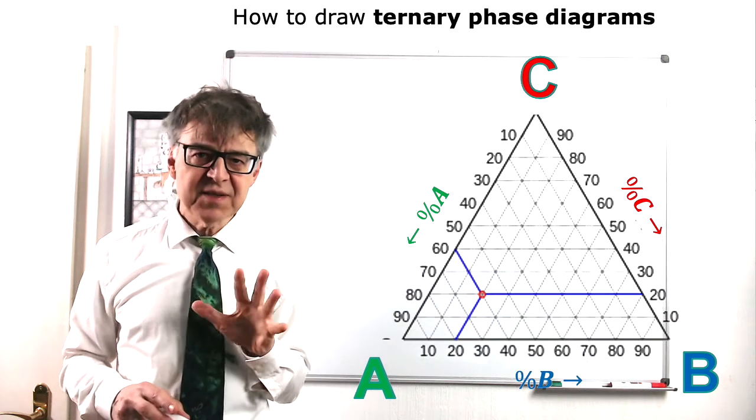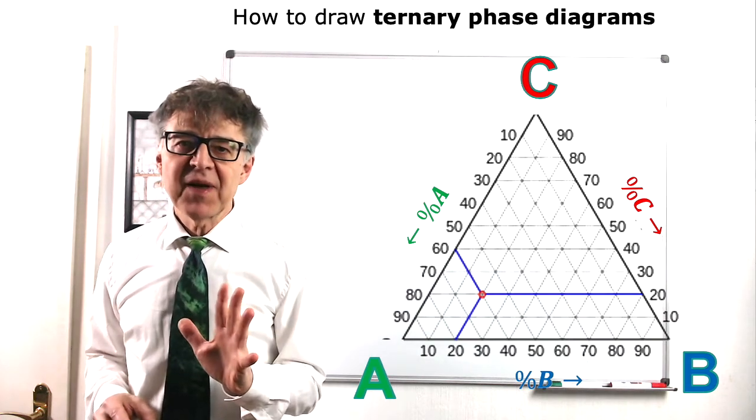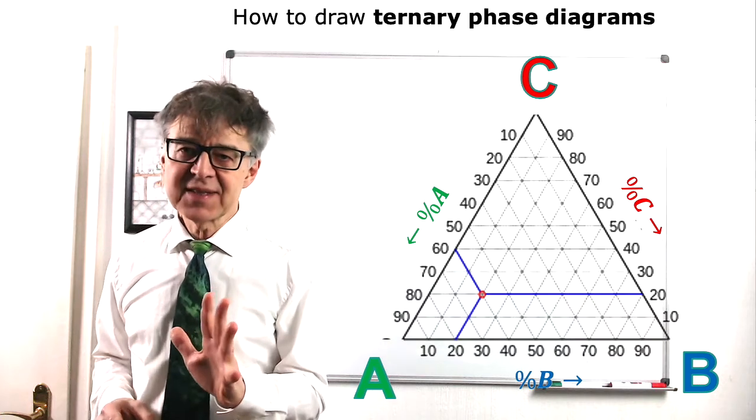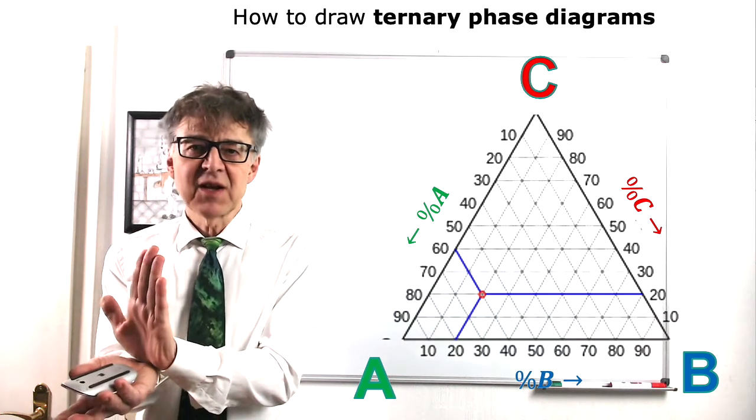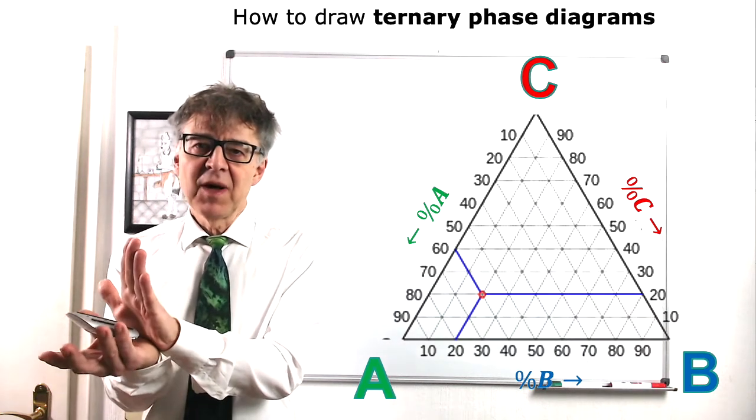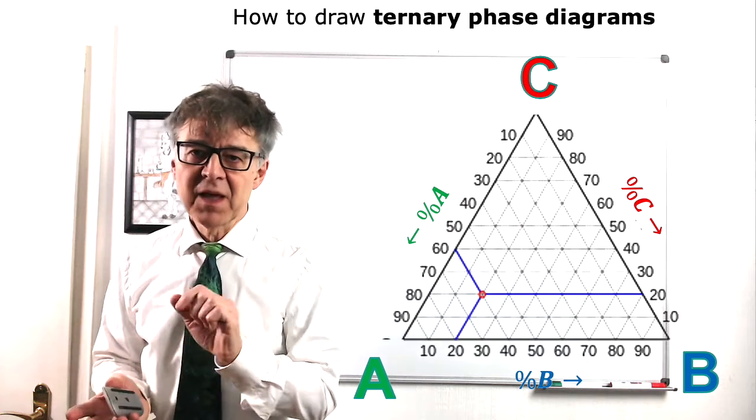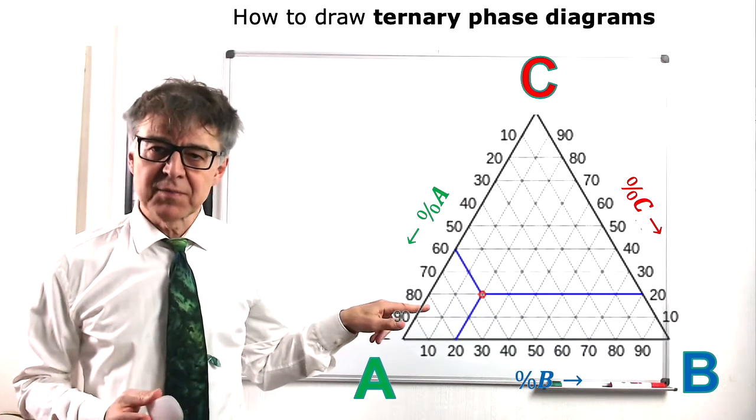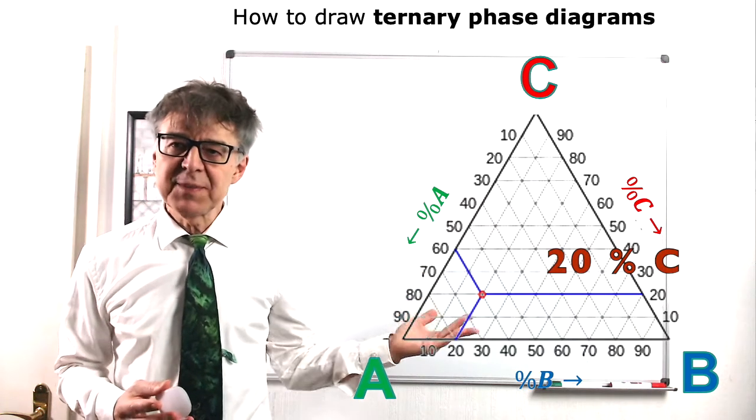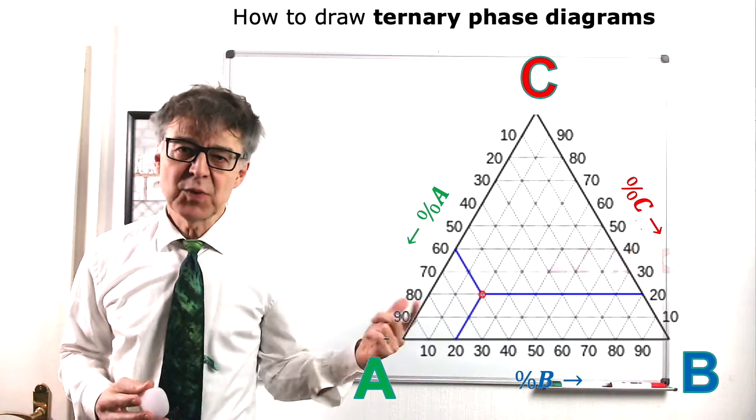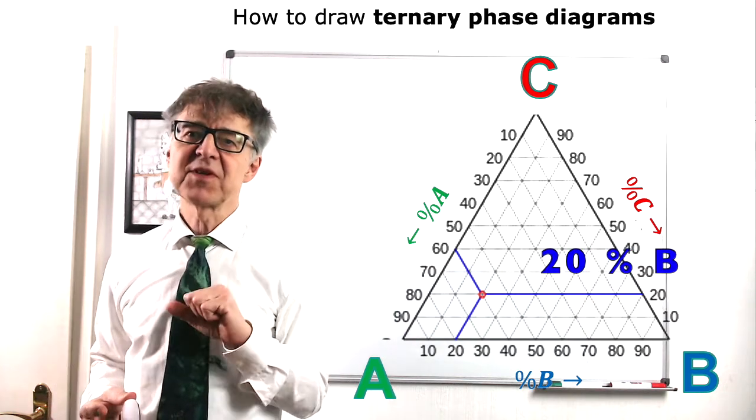When discussing the phase triangle, you have to keep in mind that the composition axes are not perpendicular to each other, but form a 60-degree angle. The composition of the red dot marked here corresponds to 20% of component C, 20% of component B, and 60% component A.